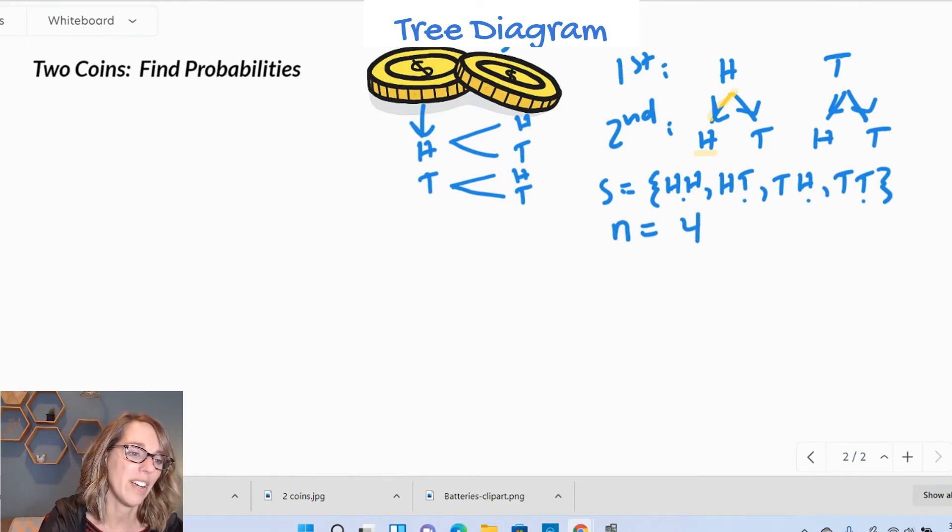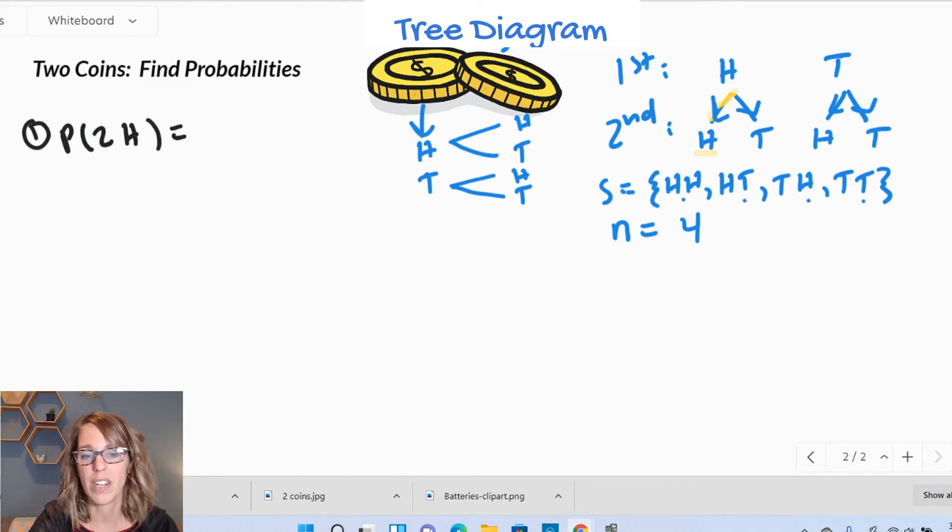Let's go ahead and do some examples. Number one, what's the probability of getting two heads? Well, the probability of getting two heads, there is only one double head, head, head in that set. So there's one in there out of the total number of outcomes, four. So that's going to be one out of four. If I divide that in my calculator or just think about it, that's going to be 0.25 or 25%.